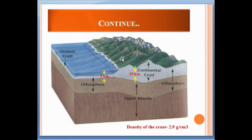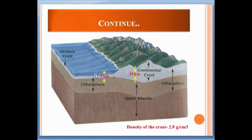Here you can see the oceanic crust and the continental crust. The continental crust is 35 kilometers thick while the oceanic crust is generally 5 kilometers thick. The density of the crust is 2.9 grams per centimeter cubed. To reach the upper mantle, you need to travel nearly 35 kilometers in continental crust areas, while in oceanic crust areas you only need to travel 5 kilometers from the surface of the ocean.